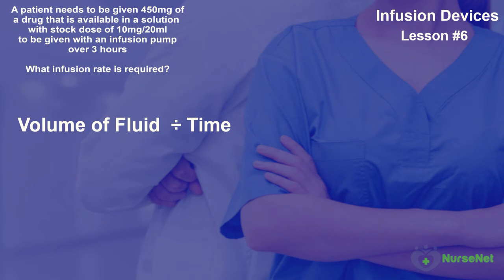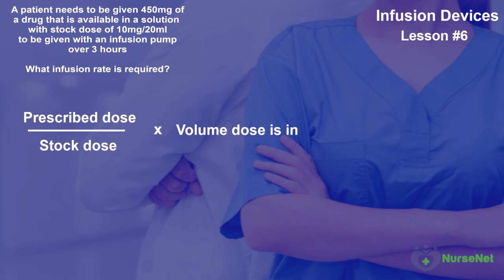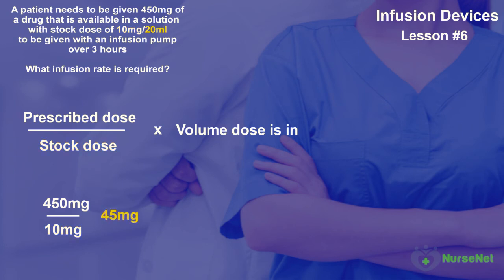Let's break this down into two parts. First, let's revert back to our formula: volume of solution divided by time to give us the infusion rate. In the question we know the time, which is three hours, but we haven't explicitly been given the volume of the solution. So we need to use our basic drug calculations: prescribed dose divided by stock dose, multiplied by the volume the stock dose is in. We have a prescribed dose of 450 milligrams divided by the stock dose of 10 milligrams, giving us 45. Multiplied by the volume the stock dose is in — 20 millilitres — which gives us 900 millilitres, since the stock dose is dissolved in a 20 millilitre per 10 milligram solution.